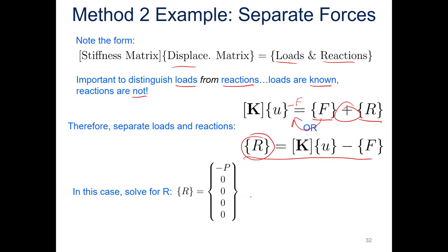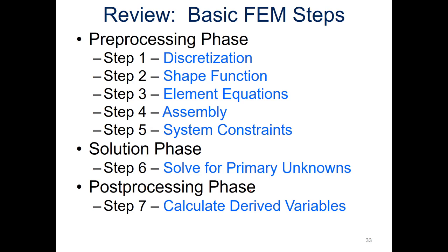To review all the steps: discretization is common to any formulation method. What's more specific to the direct method is the shape function derivation and the element equations. Assembly and system constraints are pretty much universal across all three methods, and then solving is just the matrix math followed by our post-processing calculations. I hope you come back to the next presentation where we look at the minimum total potential energy formulation.